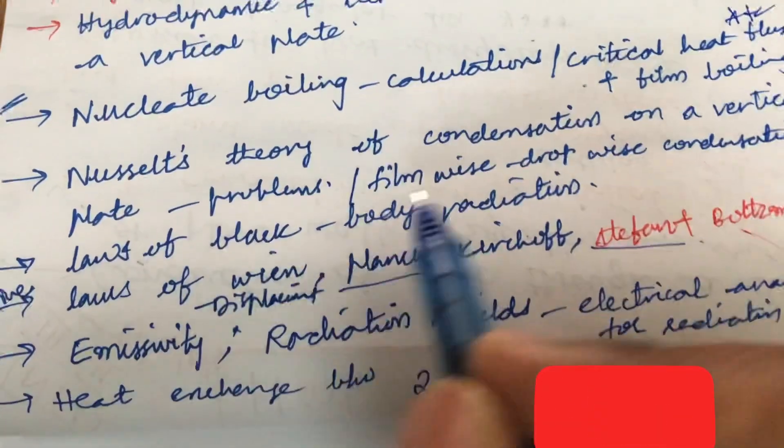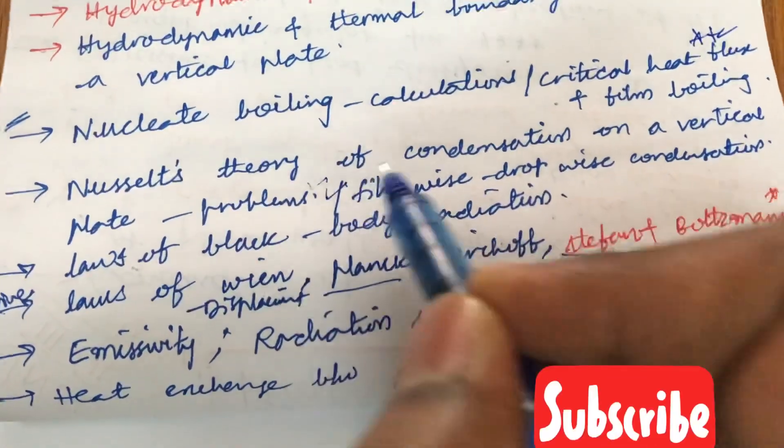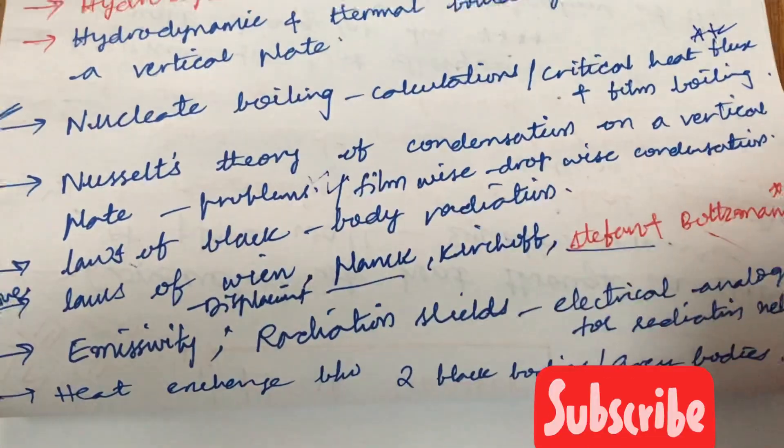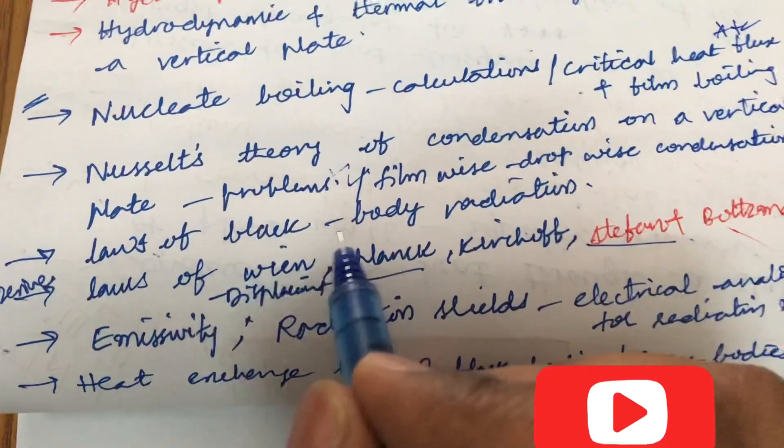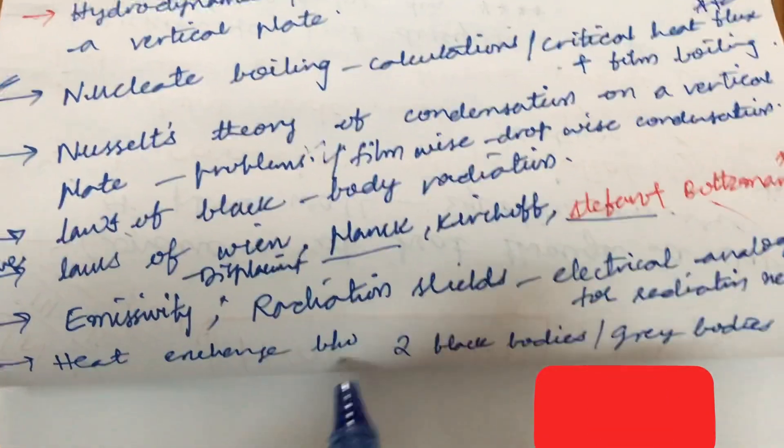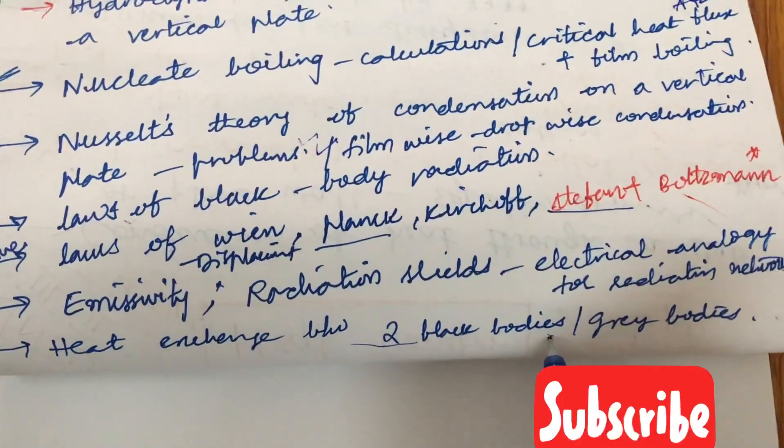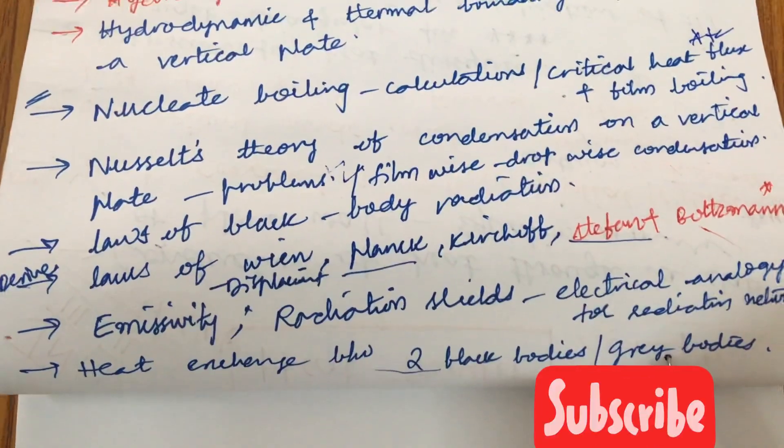Later, Nusselt's theory of condensation on a vertical plate and the problems related to it, as well as filmwise and dropwise condensation. Later, explain laws of black body radiation as well as sometimes they may be asking you heat exchange between two bodies, black bodies or grey bodies. You need to work out the expression and the problems related to it.